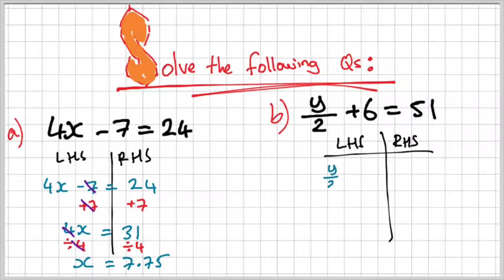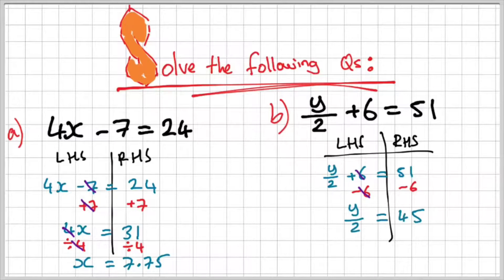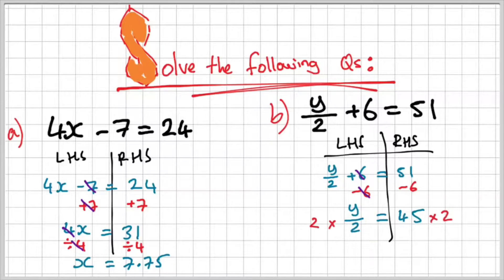For Part B, I set up my left-hand side and right-hand side as y over 2 plus 6 is equal to 51. I subtract 6 from both sides — that cancels out the 6 on the left to give y over 2 equals 45. Since I have a division here, the opposite of dividing by 2 is to multiply by 2. Multiplying by 2 and dividing by 2 cancel each other out, and I end up with y equals 90, because 45 times 2 equals 90.